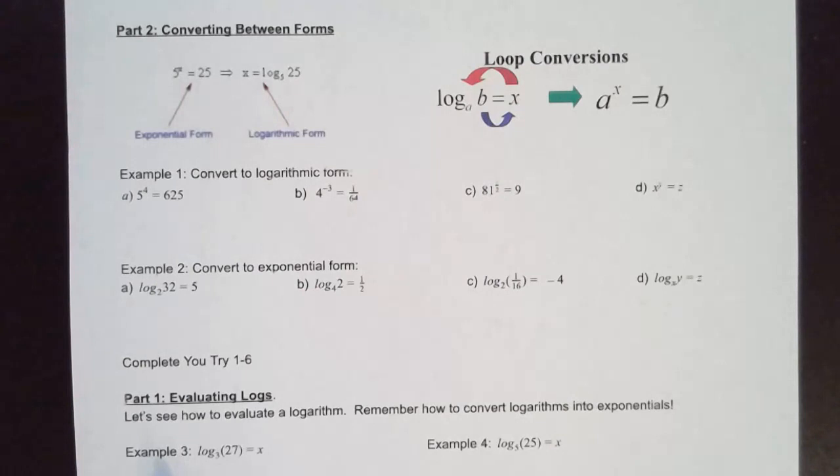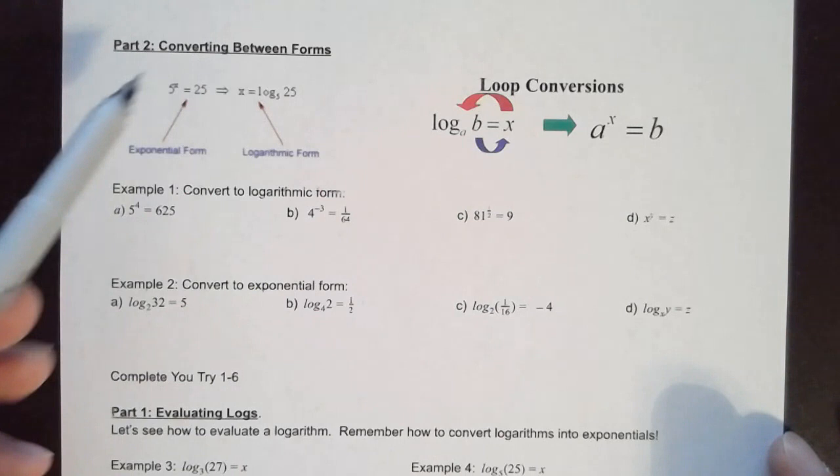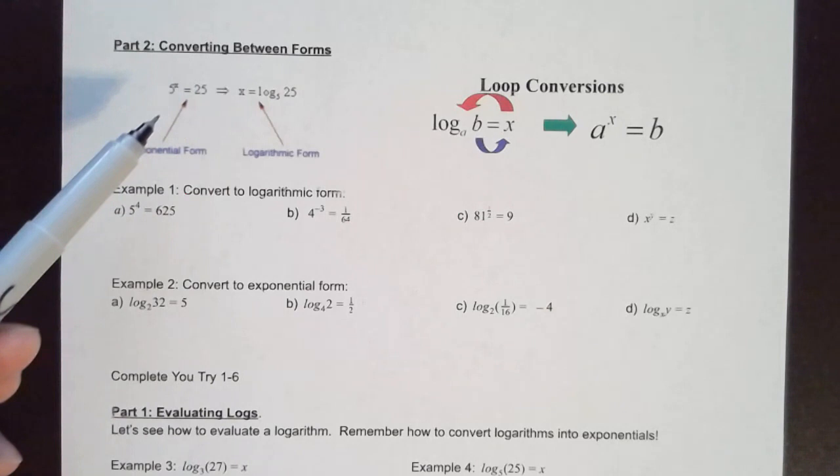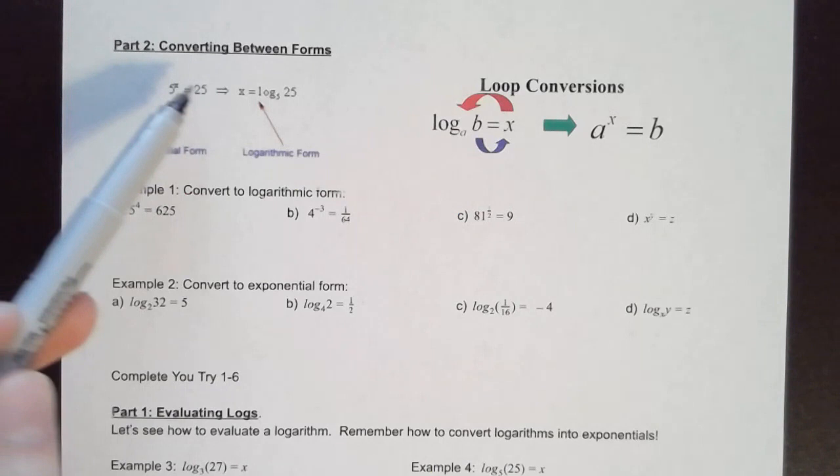Let's look at the next page where we have some practice problems converting between the two forms. Here is one we're probably familiar with: 5 to some power equals 25. Most of us recognize this is 5 squared equals 25. But we're just trying to convert to the other form. The exponent X goes on one side, and this will be log base 5.